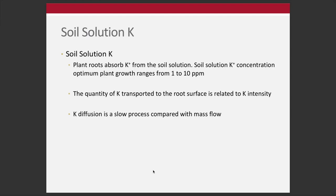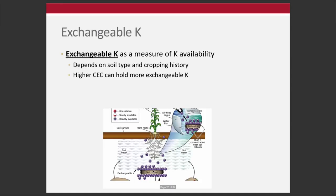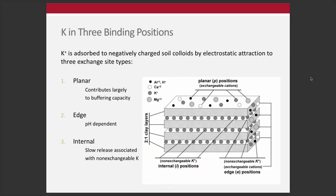Plants absorb K from solution. Optimal plant growth ranges anywhere between one to ten parts per million in the soil. The quantity of K transported to the root surface relates to concentration intensity since it's primarily a diffusion-driven process, which is slower compared to mass flow. Exchangeable K is what a soil test for potassium is measuring — pulling potassium off the soil colloid exchange sites and quantifying it. The higher the CEC, the more potassium the soil can hold.